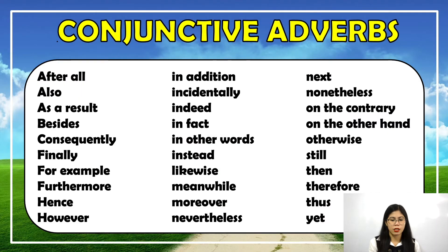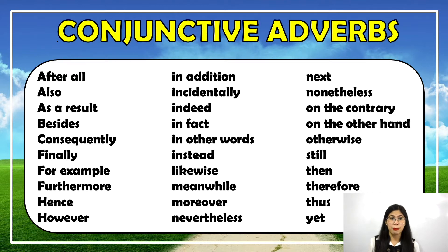Here are some examples of conjunctive adverbs: after all, also, as a result, besides, consequently, finally, for example, furthermore, hence, however, in addition, incidentally, indeed, in fact, in other words, instead, likewise, meanwhile, moreover, nevertheless, next, nonetheless, on the contrary, on the other hand, otherwise, still, then, therefore, thus, and yet.